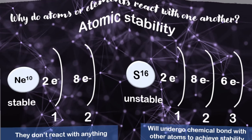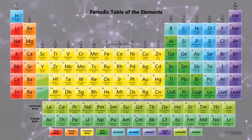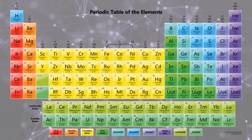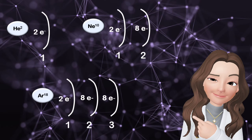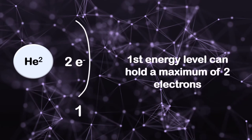Before we go further into chemical bonding, there are groups of elements that are already stable and do not react with anything — that is the group of noble gases. The noble gases are the elements in group 18 of the periodic table. For example, helium, neon, and argon are the first three noble gases. They are already stable because they already have 8 valence electrons, except for helium with only 2 valence electrons. Helium, with atomic number 2, fills the first energy level with 2 electrons. Since the first energy level can hold a maximum of 2 electrons, helium is already stable.